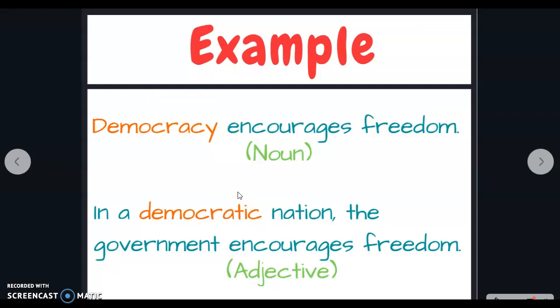But what if I change this democracy into an adjective? Democratic. I cannot say democratic encourages freedom, because remember that I am not talking about a noun. I am talking about an adjective, and remember that an adjective in English is going to be always next to the noun that I am talking about. So, for example, in this case, in a democratic nation, the government encourages freedom. So as you can see, I am not talking about in general terms of the political party of democracy. I am talking about a country that practices democracy. That is democratic. I am talking first about a specific nation that is democratic.